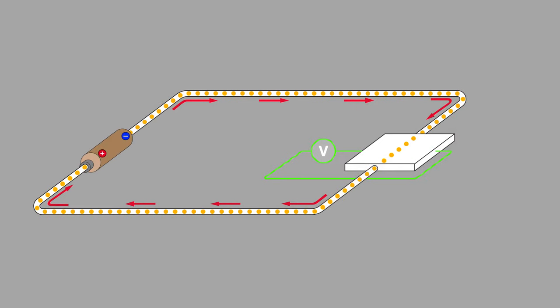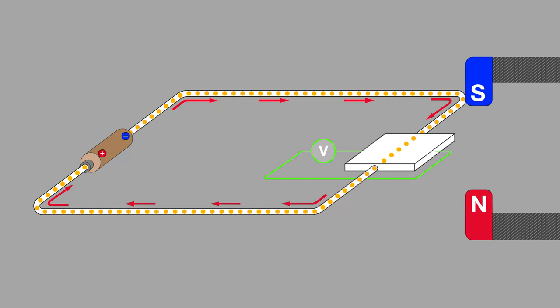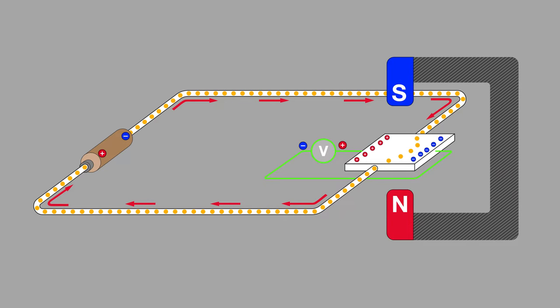The Hall Effect is the production of a voltage difference across a conductor transverse to both an electrical current in the conductor and to an applied magnetic field perpendicular to the current. That sounds complicated, but it's a fairly simple phenomenon. This animation shows that when a magnetic field is applied perpendicular to the flow of current through a semiconductor, the combination of the current and the applied magnet induces a voltage — the Hall voltage.